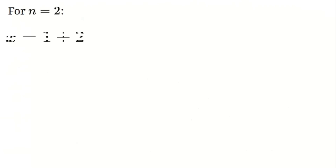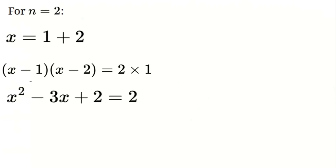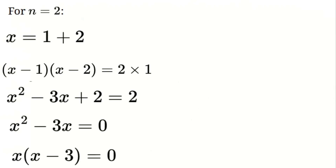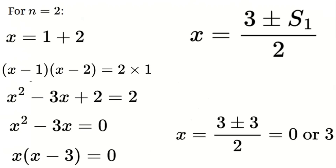Let's start with n equals 2: x equals 1 plus 2, so (x minus 1)(x minus 2) equals 2 times 1. Expanding, x² minus 3x plus 2 equals 2. Simplifying, x² minus 3x equals 0, giving x(x minus 3) equals 0, so x equals 0 or x equals 3. Observe that x equals (3 plus or minus s(1)) divided by 2, where s(1) equals 2² minus 1 equals 3. This gives x equals (3 plus or minus 3) divided by 2, which simplifies to 0 or 3 — matching our earlier result.